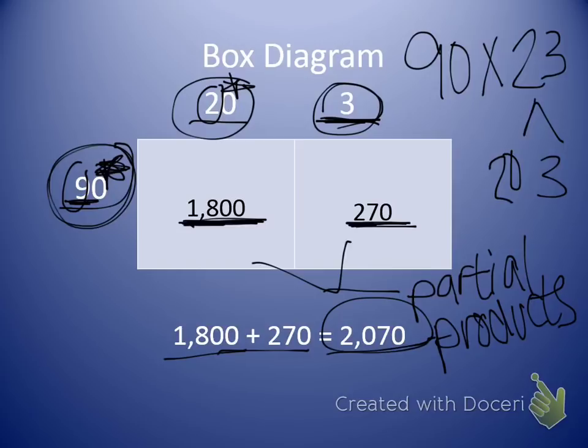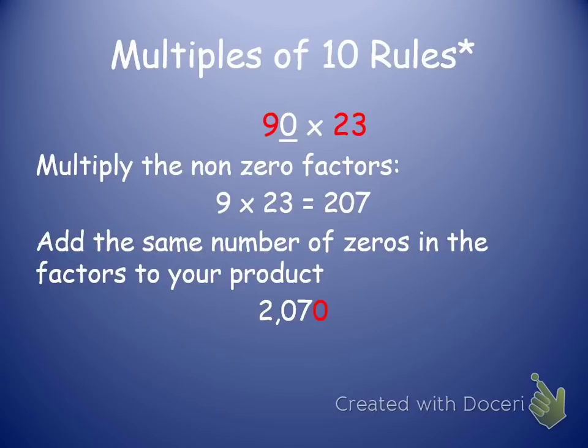There is another way to solve this problem, which is why we have our multiples of 10 rules. In the next slide, you need to write down all of these rules to make sure that you remember. Our multiples of 10 rules. Our example problem we have is 90 times 23, which is the problem we just solved in the previous slide. If you did not already include your box diagram, go ahead and make sure you go back and include that as well.